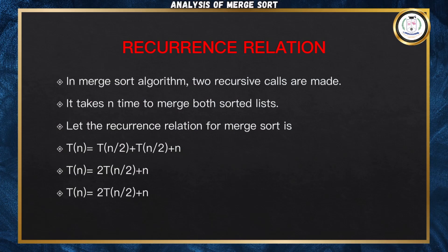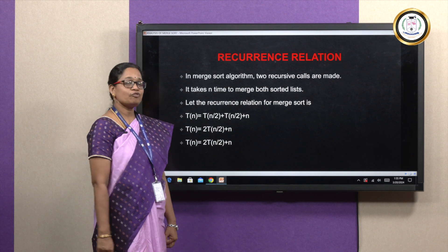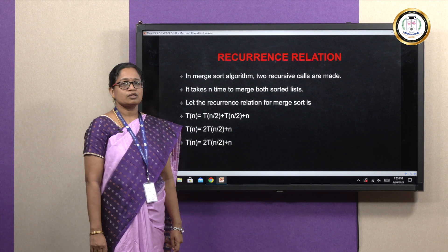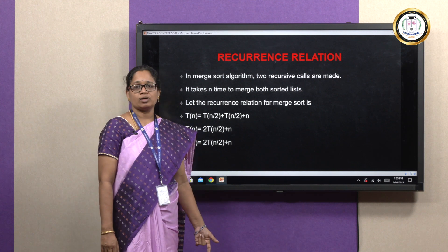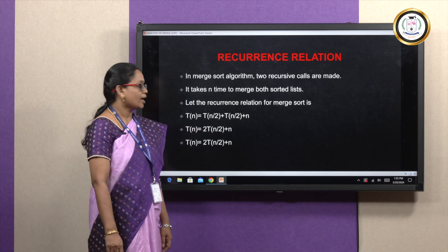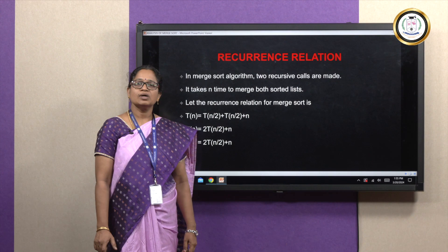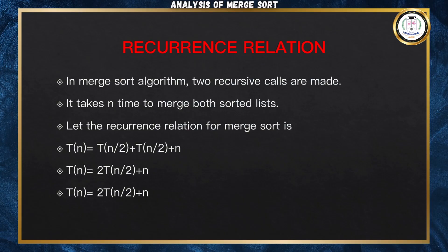The recurrence relation for merge sort can be written as T(n) = T(n/2) + T(n/2) + n. Here T(n/2) is for sorting the left subarray, T(n/2) is for sorting the right subarray, and n is for merging the two sorted arrays. So in the next equation, we write this as T(n) = 2·T(n/2) + n.